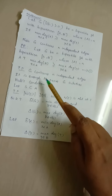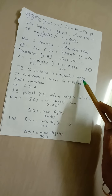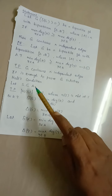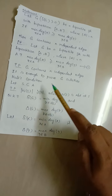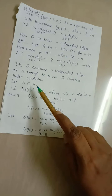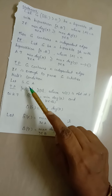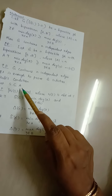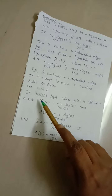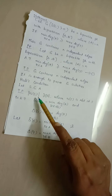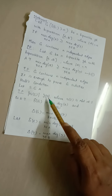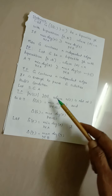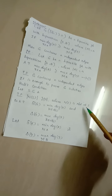To prove that G contains N independent edges, it is enough to prove G satisfies Hall's condition. To prove Hall's condition, we need one subset of A. So let S be a subset of A. Our aim is to prove that the cardinality of N(S) is greater than or equal to the cardinality of S, where N(S) denotes the neighborhood of S.